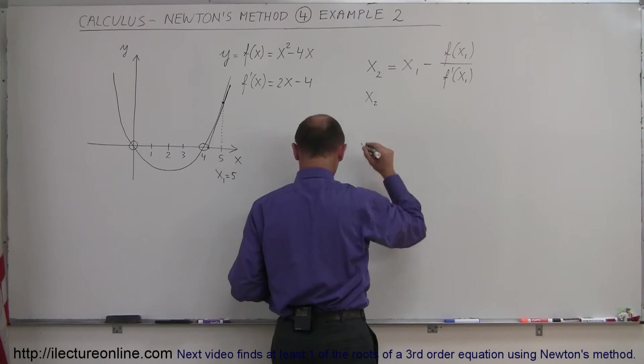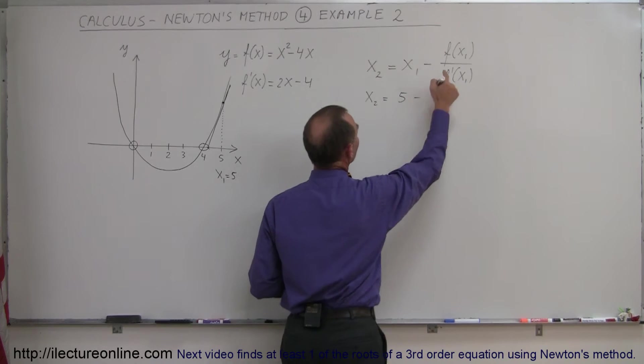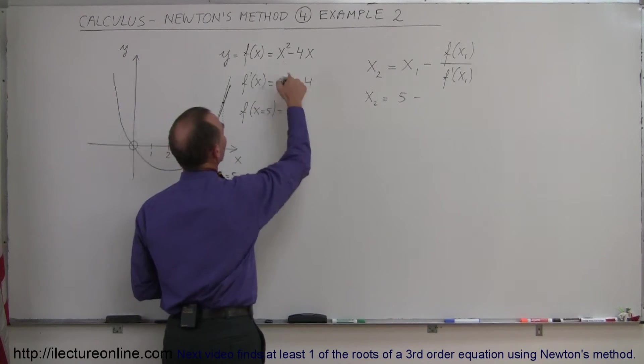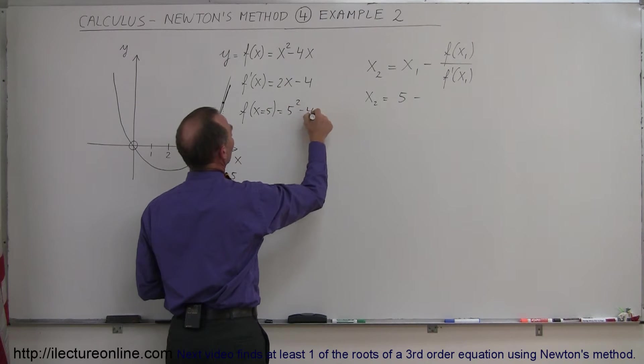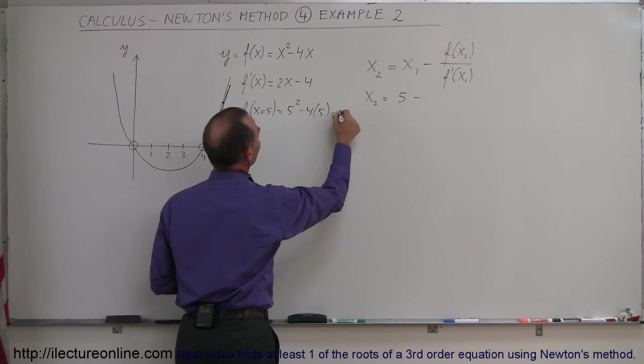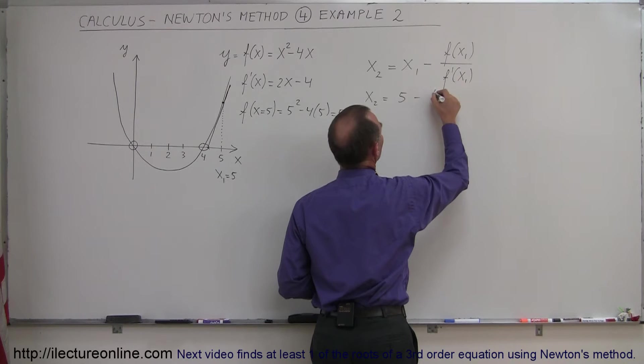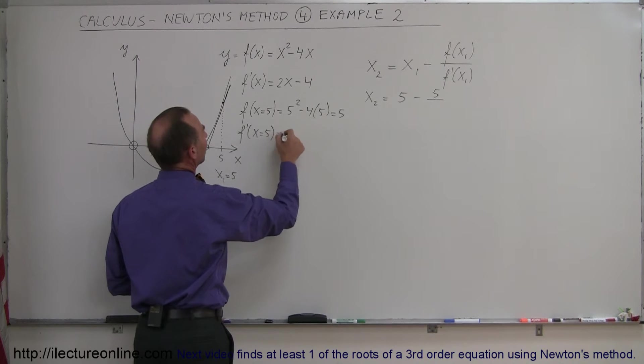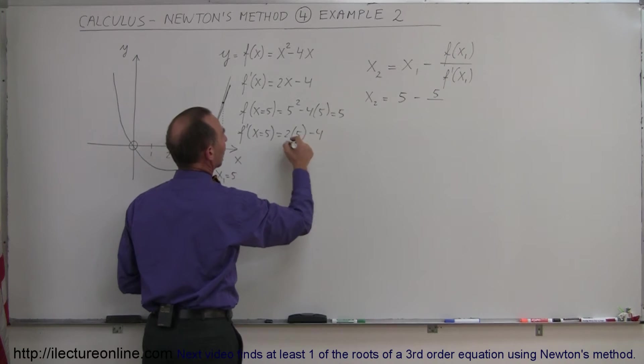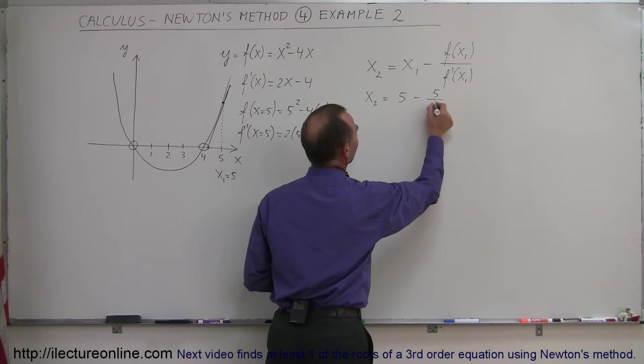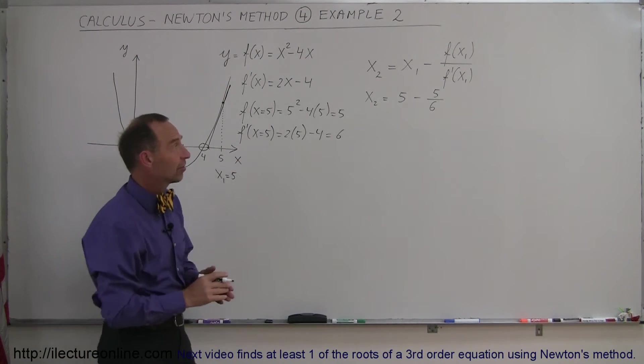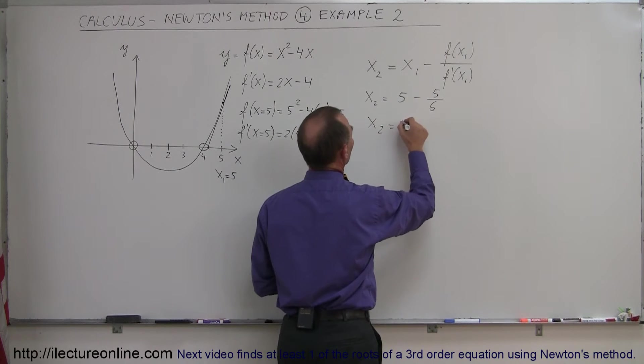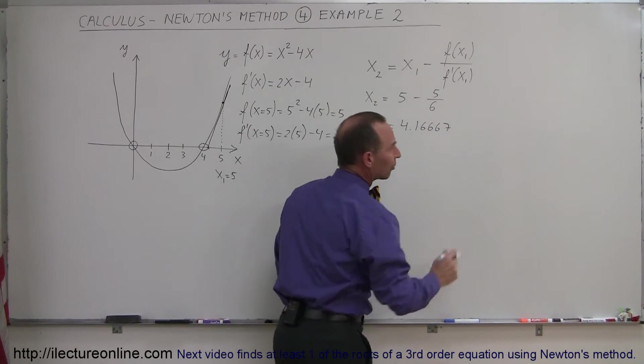So the next point, x2, which should be closer to the root than x1, is equal to 5, minus the function evaluated at x1. So if I evaluate the function, x equals 5 at 5, here's my function, we get 5 squared minus 4 times 5. So that's 25 minus 20, which is equal to 5. So the function evaluated at 5 is equal to 5, divided by the derivative evaluated at 5. So f prime evaluated at x equals 5 is equal to 2 times 5, minus 4, that's 10 minus 4, which is 6. So the denominator becomes 6. So my next point will be 5 minus 5 sixth. Well, 5 sixth is about 0.833. So we get x sub 2 is equal to 4.16667 out to the number of decimal places.